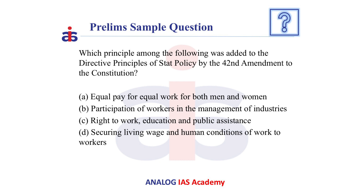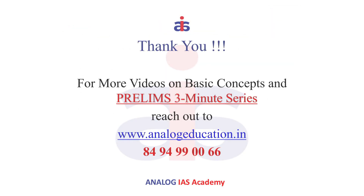Now let us see a previous year question. Which principle among the following was added to DPSP by the 42nd Amendment Act? A) Equal pay for equal work for both men and women; B) Participation of workers in management of industries; C) Right to work, education, and public assistance; D) Securing living wage and human conditions of work to workers. As we discussed earlier, the answer is B — participation of workers in management of industries, that is Article 43A. Thank you.